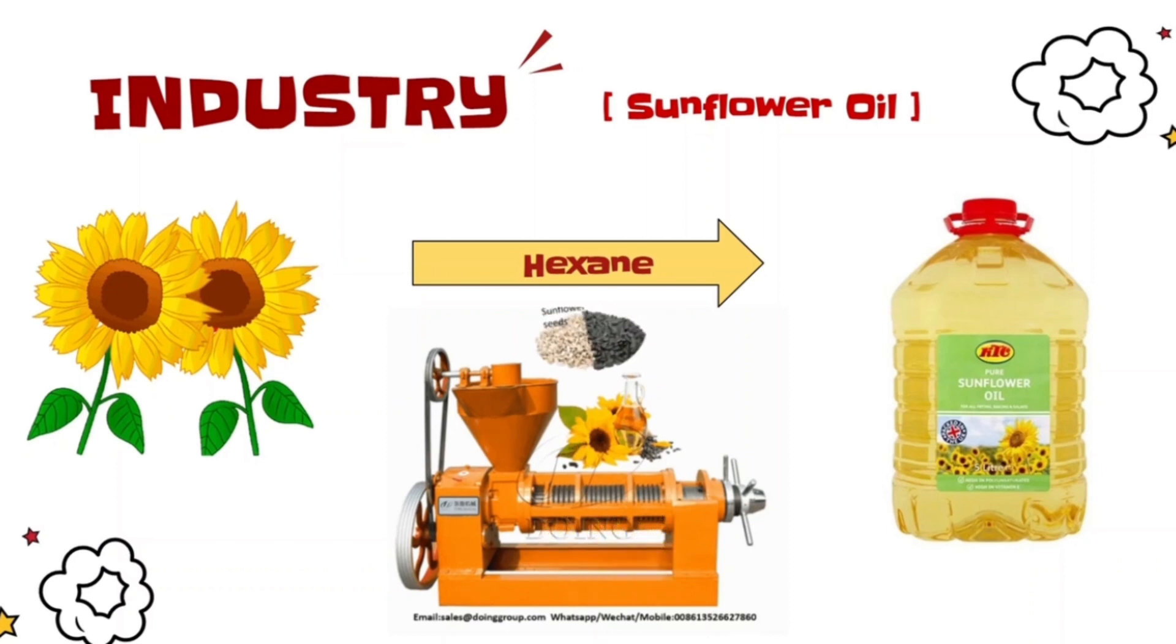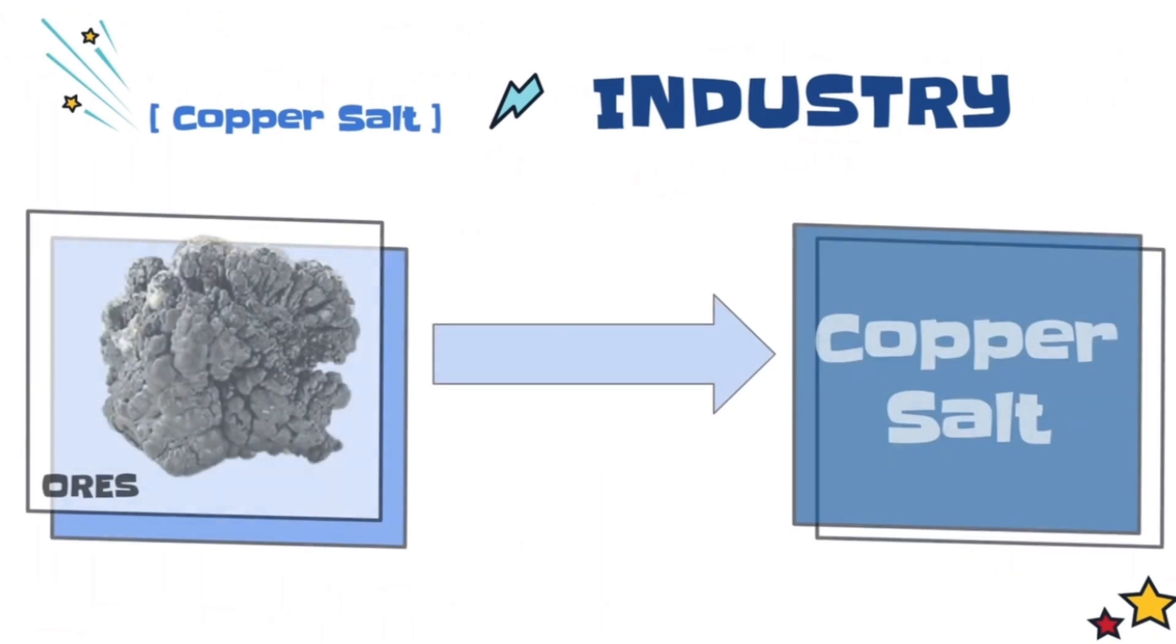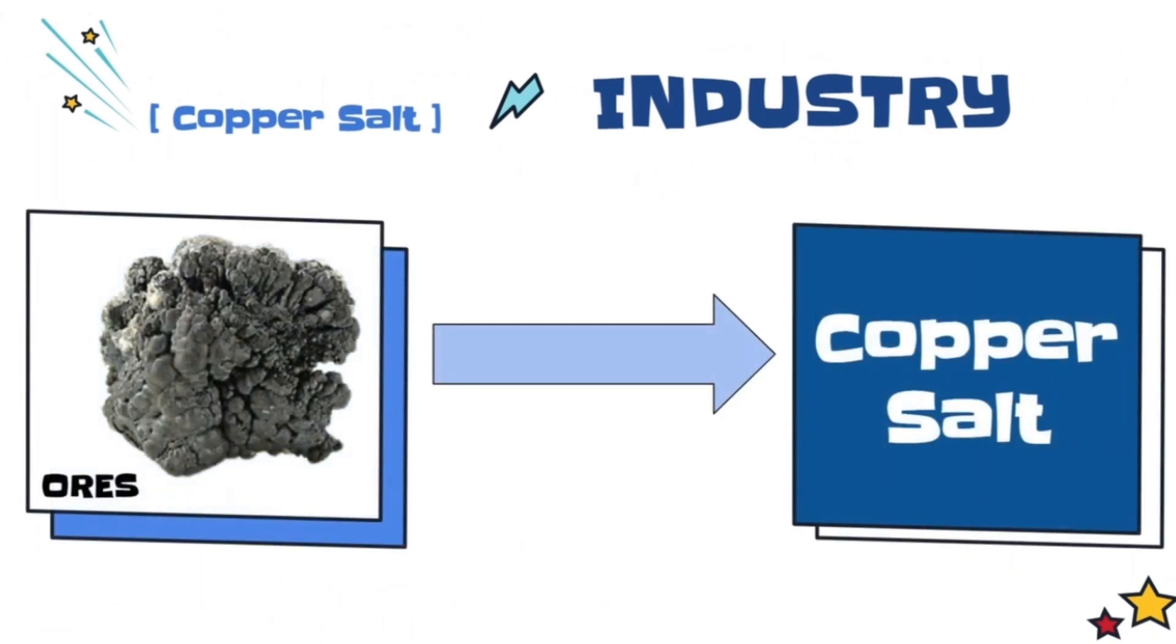In addition, industry also applies this leaching process to extract the copper salt from ore by using sulfuric acid as solvent.